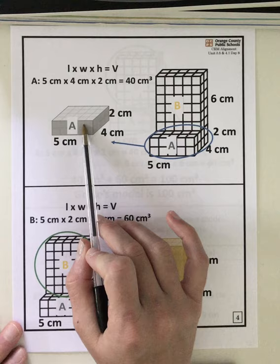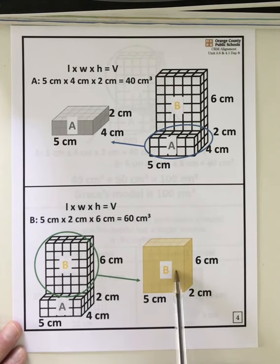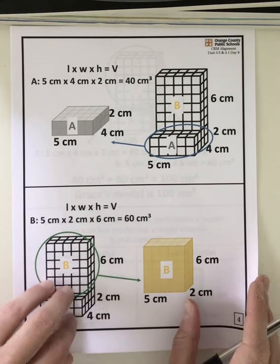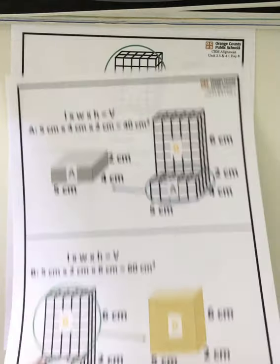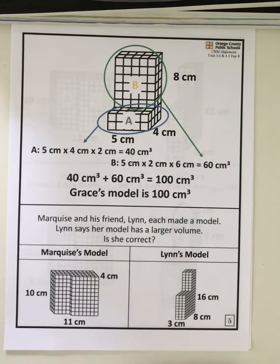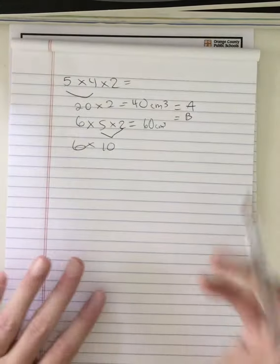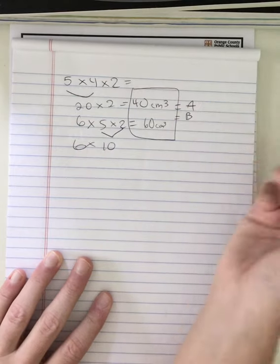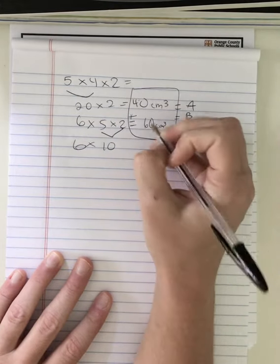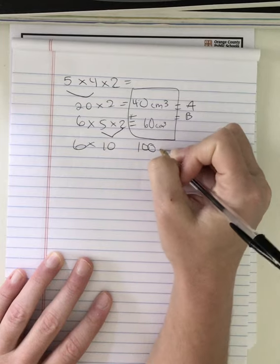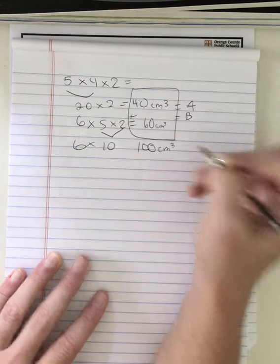So now I've figured out the volume of just the bottom and just the top. In order to figure out the volume all together, I need to add these two volumes together. So 40 plus 60 equals 100 cubic centimeters.